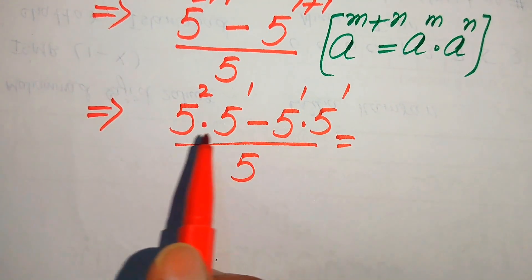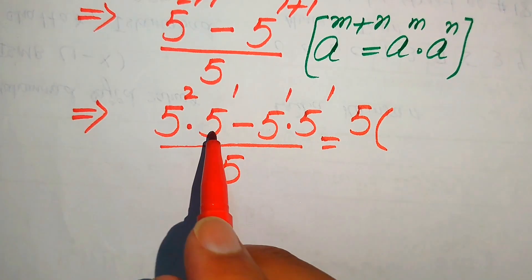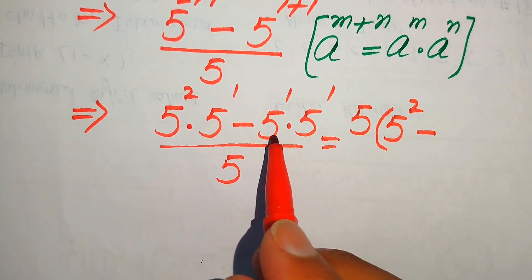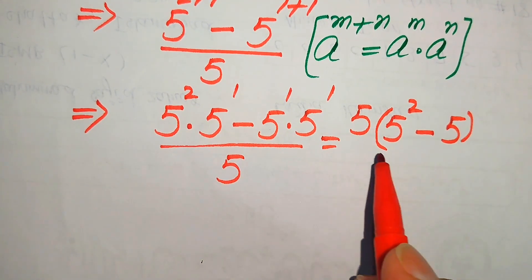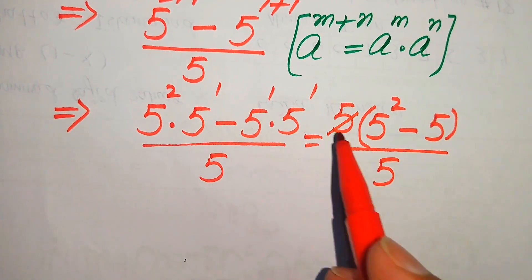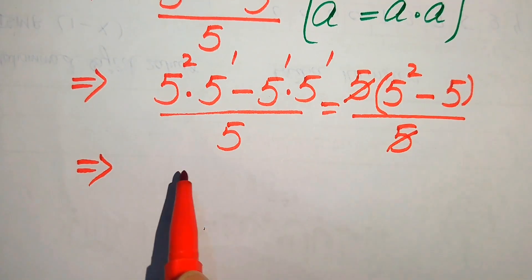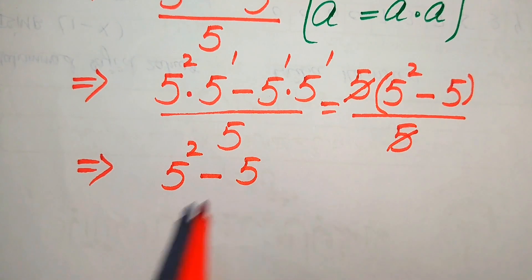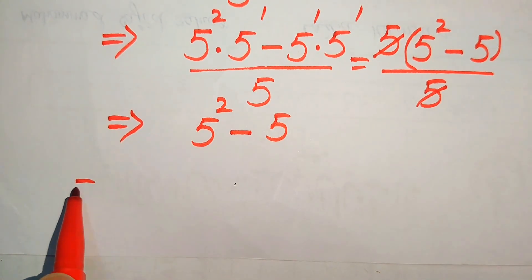In the numerator, 5 is a common factor in both terms. Taking out the common factor 5 gives us 5 times the quantity 5 squared minus 5, divided by 5. The 5 in the numerator cancels with the 5 in the denominator.